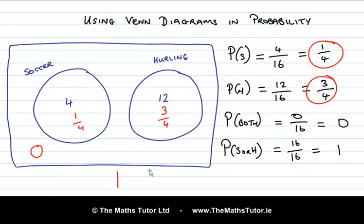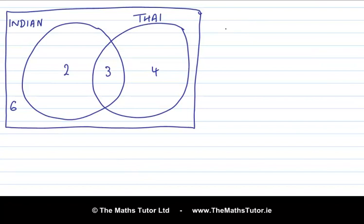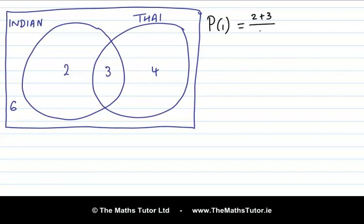Let's look at another example. This Venn diagram represents a group of people and whether they like Indian food, Thai food, or neither. The set of people who like Indian food overlaps with the set who like Thai food, and some people like neither. The probability that someone likes Indian food is 2 plus 3, divided by the total of 15, which is 5 over 15, simplified to one third.